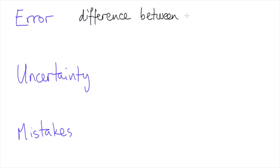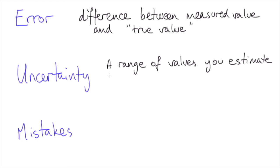Error is the difference between what you measure and the true value of the quantity. The uncertainty in a measurement is your best estimate of the range of values you think the true value will lie within.